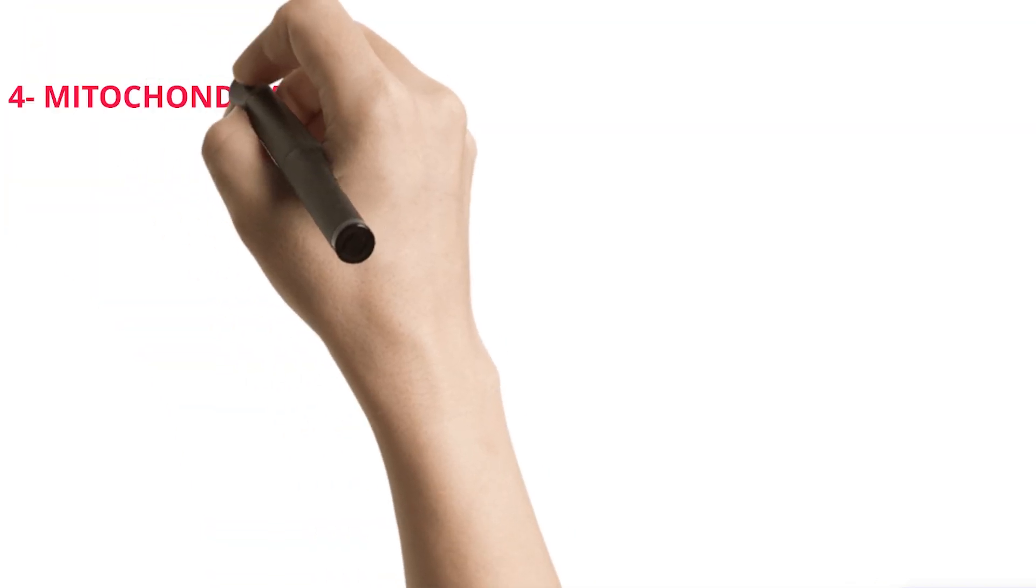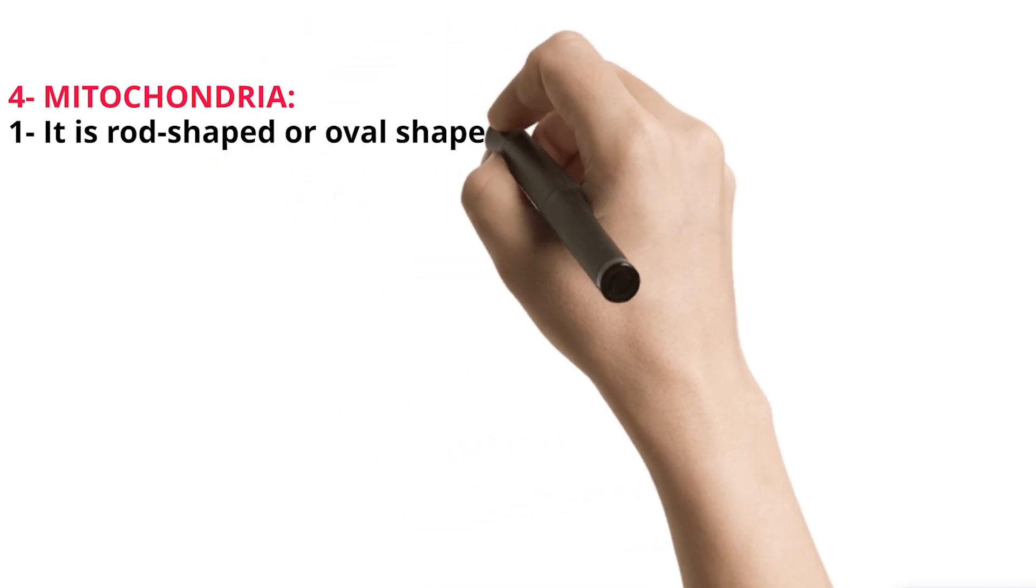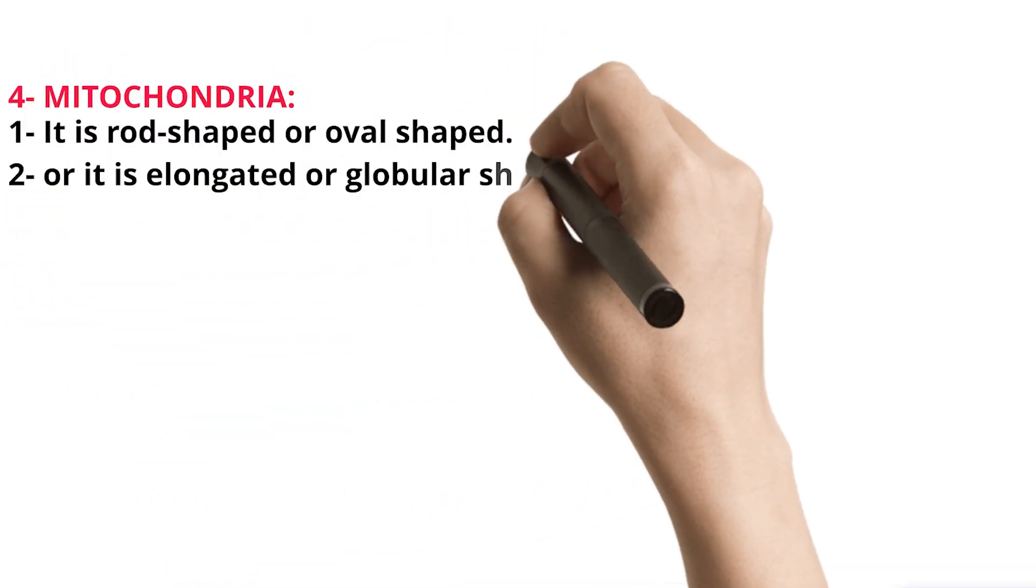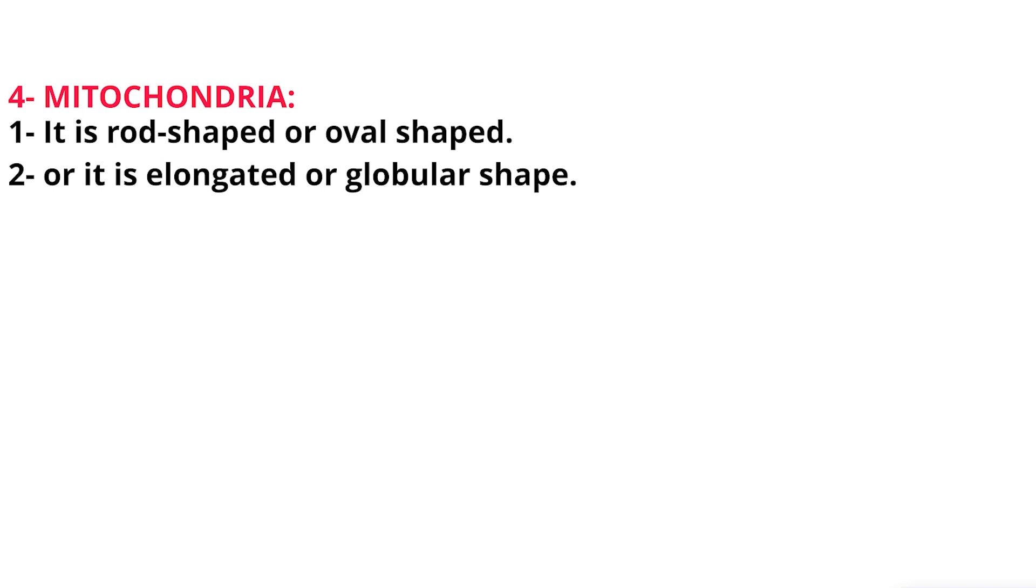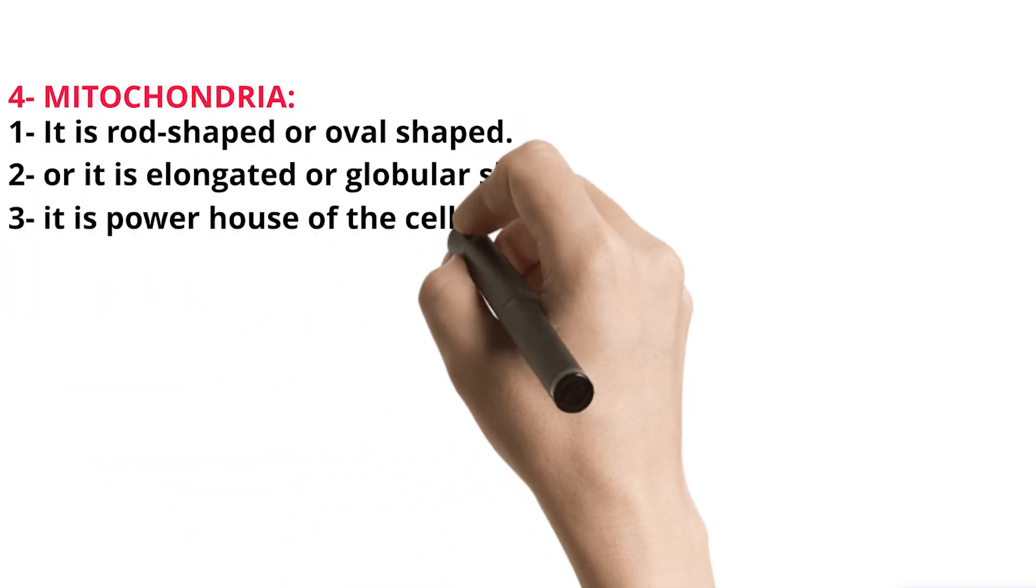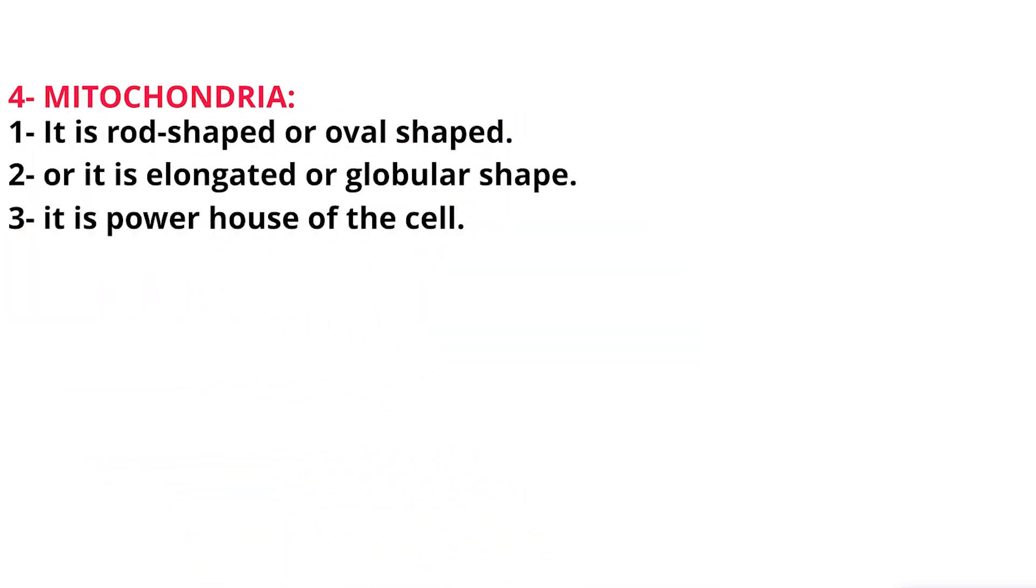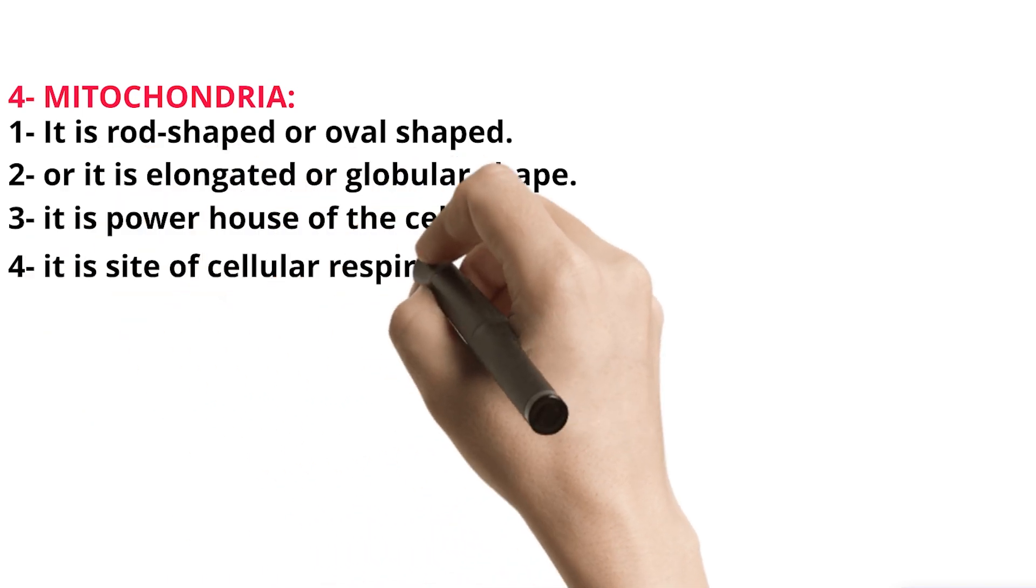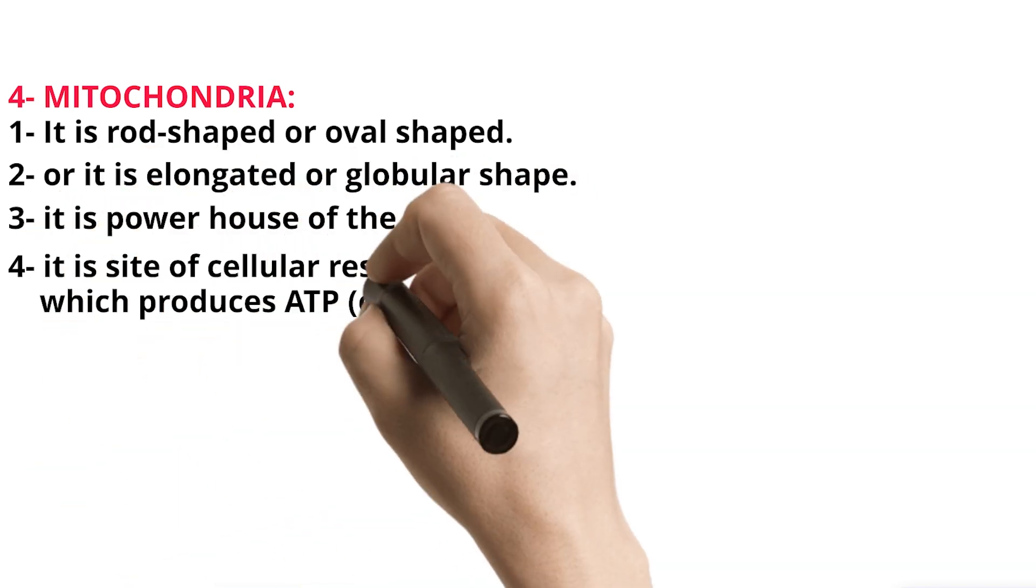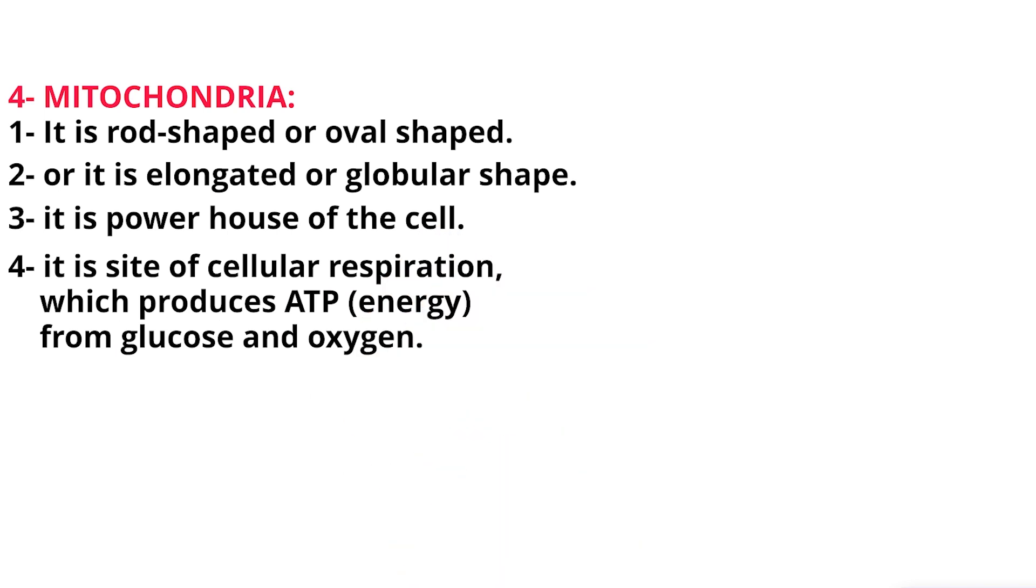4. Mitochondria. It is rod-shaped or oval-shaped, or it is elongated or globular shape. It is powerhouse of the cell. It is site of cellular respiration, which produces ATP energy from glucose and oxygen.